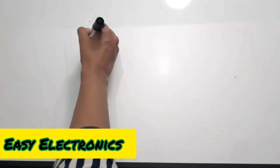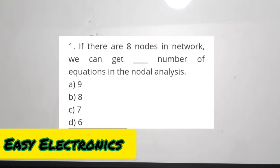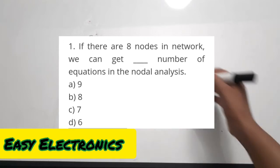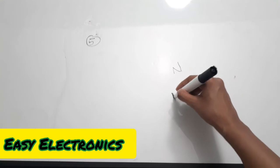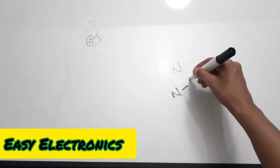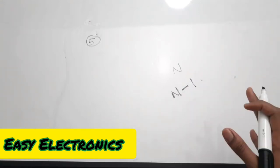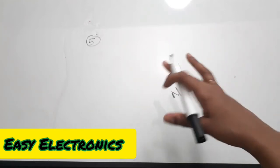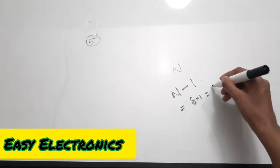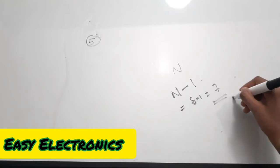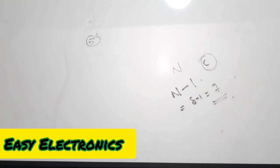The fifth question is from network analysis: if there are eight nodes in a network, we can get how many equations? If there are n nodes, the number of equations equals n minus 1. So with 8 nodes, that is 8 minus 1 which is 7 equations. The correct answer is option C. Moving on to the sixth question.